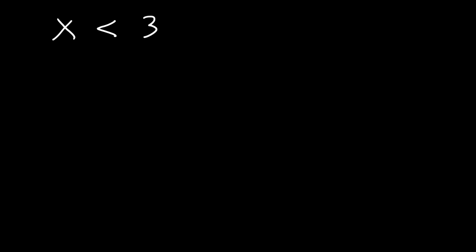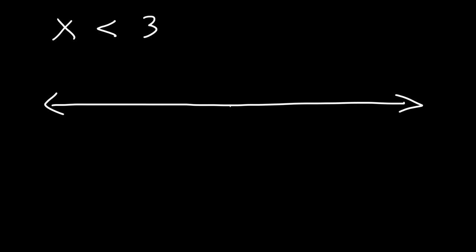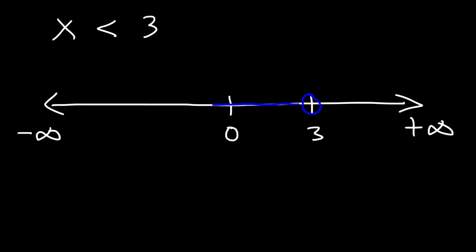Now let's look at another example. Let's say that x is less than 3. Feel free to pause the video. So once again, let's start with a number line — let's put 0 in the middle, and 3 is to the right of 0. Let's put our infinity symbols. Now x is less than 3, but does not include 3, so we're going to use an open circle at 3. But because it's less than, we're going to shade to the left, as opposed to the right.